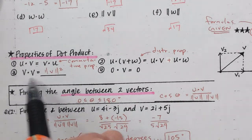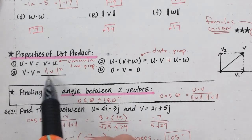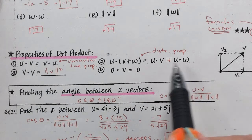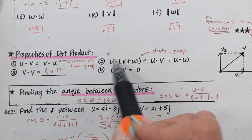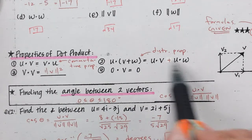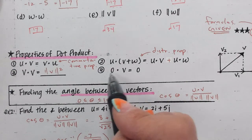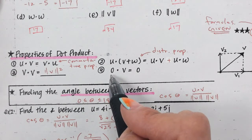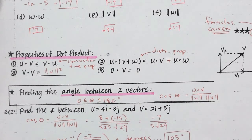We just proved this: V dot V equals the magnitude squared. Then there's the distributive property — we can add vectors together and then take the dot product, or we can take each dot product separately and add, and we get the same thing. And if you multiply by a zero vector you're going to get zero, because something times zero is zero, something times zero is zero, and zero plus zero equals zero.